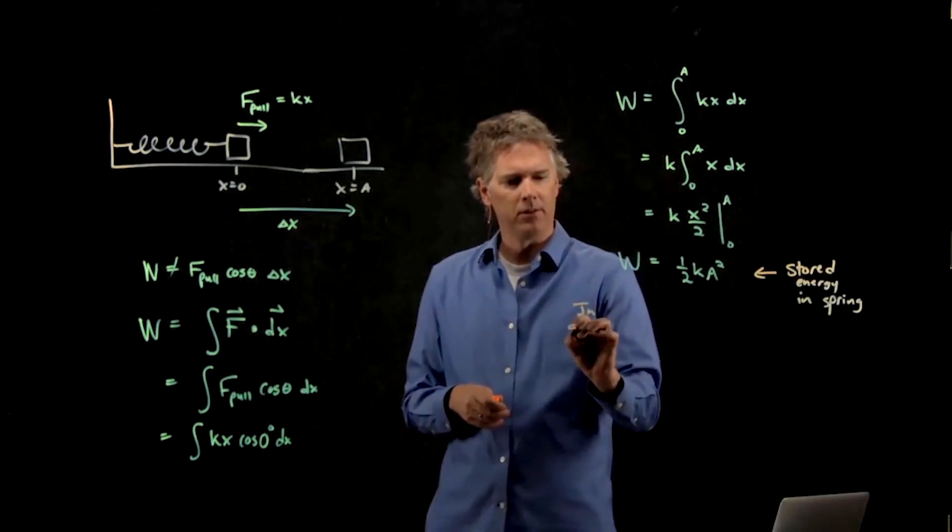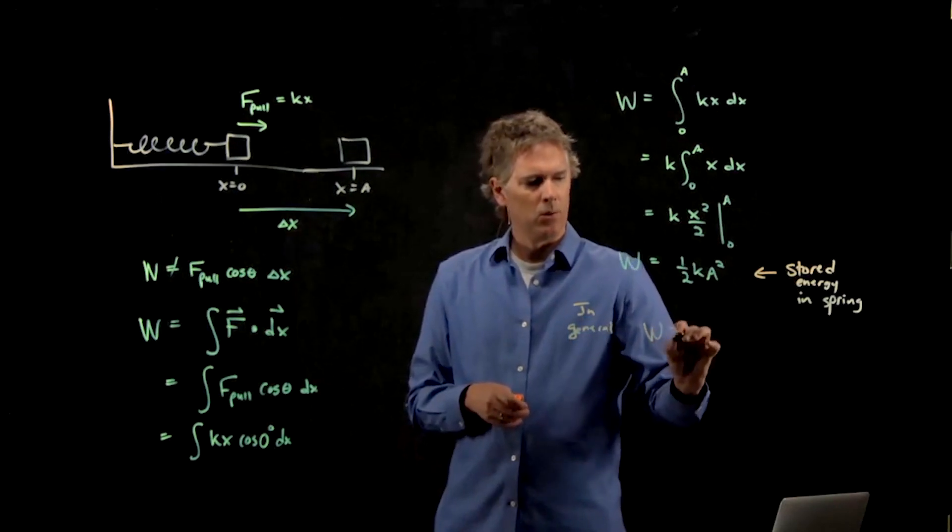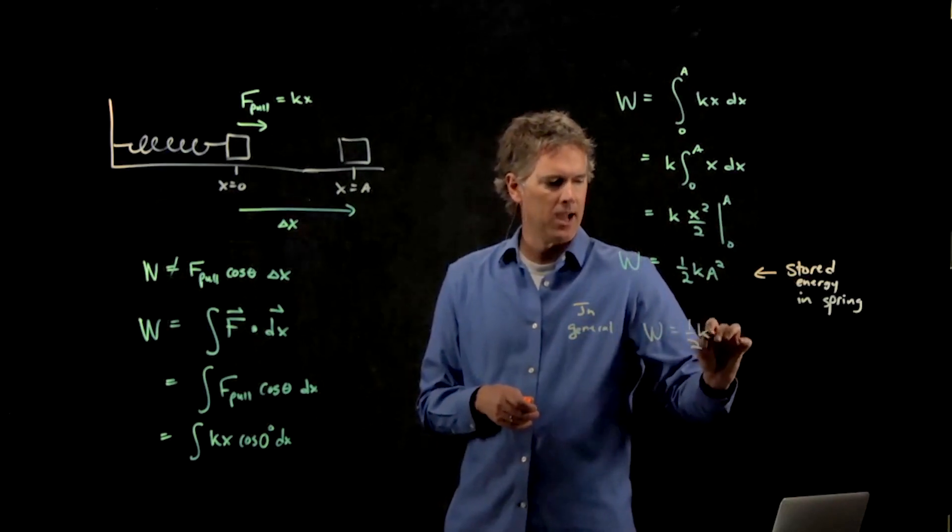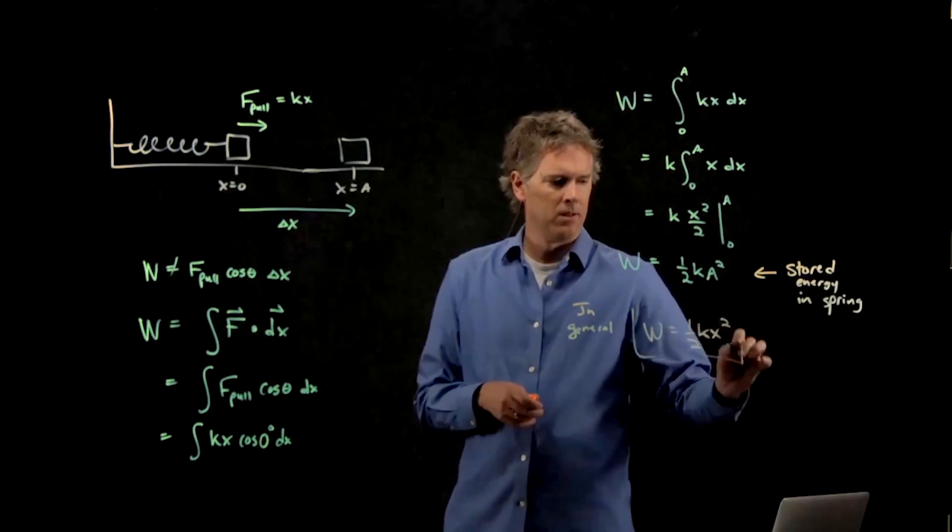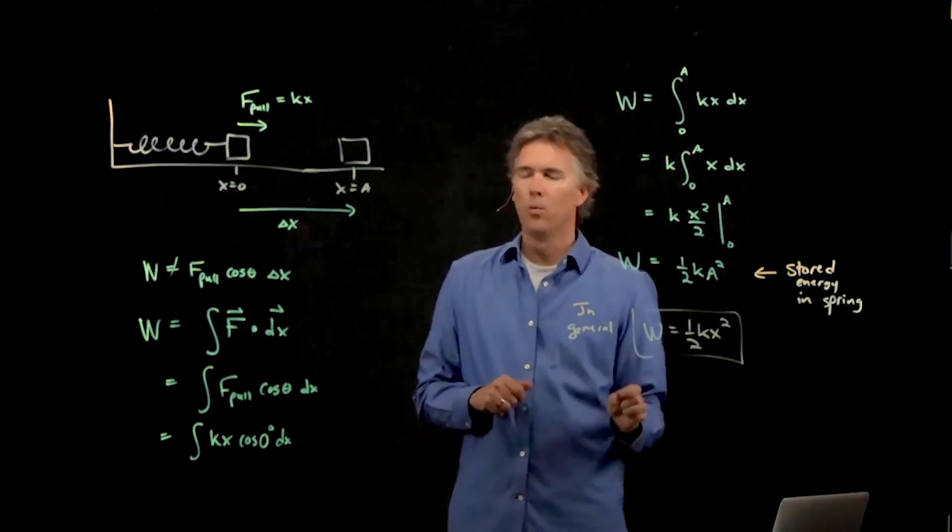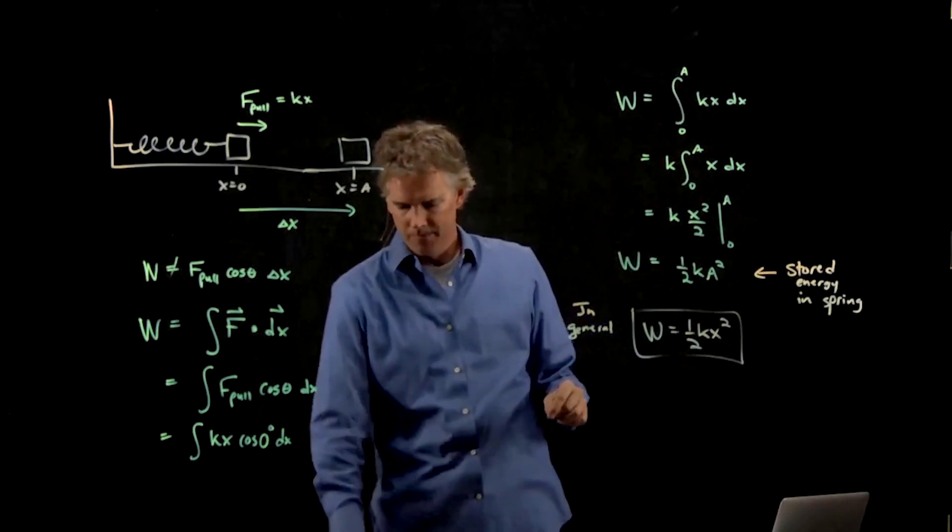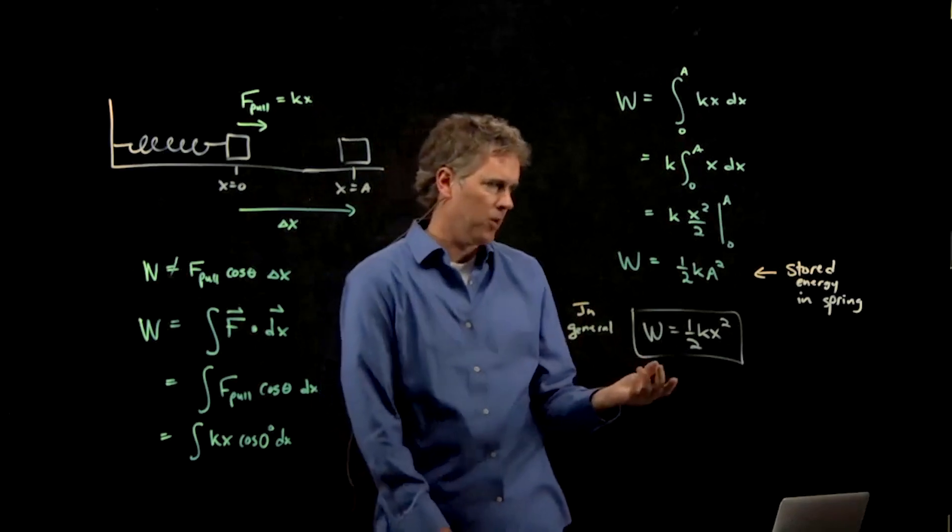And we know what this is in general. The work is 1 half kx squared. And we saw that before. That's the energy in the spring. Where did it come from? It came from doing this integral. That's how you end up with the x squared over 2.